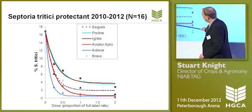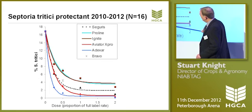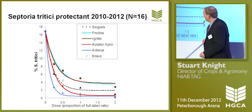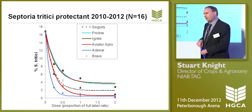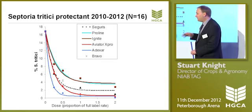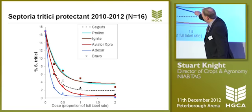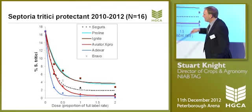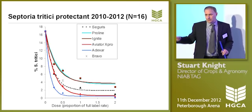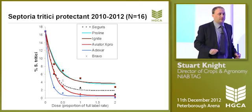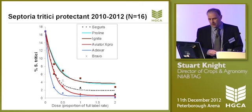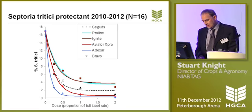Again, look at the performance of the half-dose Bravo chlorothalonil treatment. We don't have a curve — just that single point — but you can see how that compares with the half-dose treatment of the azoles. Clearly we're getting very good septoria protection from chlorothalonil over the last three years.